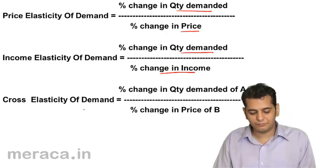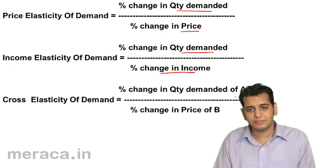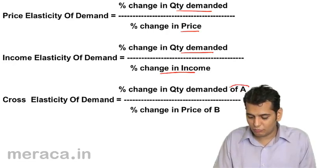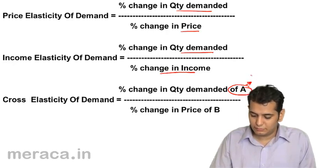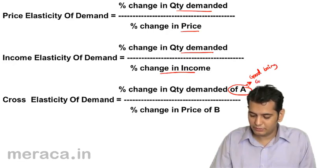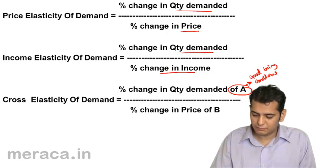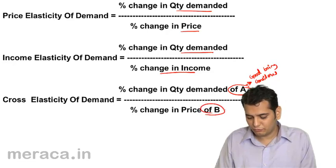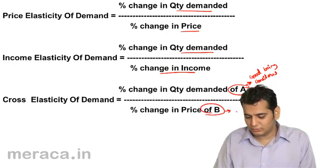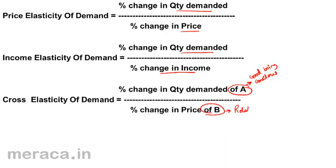Cross elasticity of demand is calculated as percentage change in quantity demanded of good A — which is the good being considered — divided by the percentage change in price of good B, which is the related good.